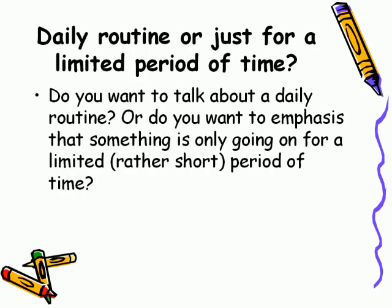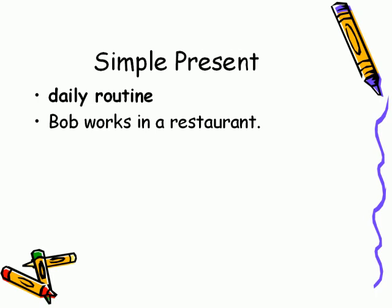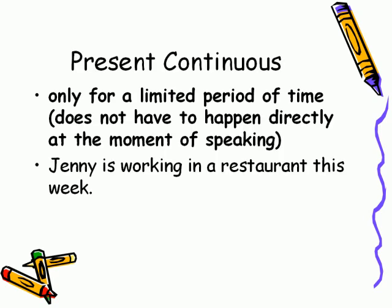Daily routine or just for a limited period of time? Use simple present for daily routines. Example: Bobby works in a restaurant. Use present continuous to emphasize something is only happening for a limited period of time — it does not have to be happening at the moment of speaking. Example: Jenny is working in a restaurant this week.